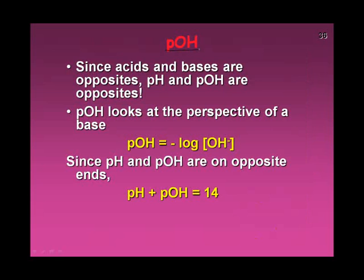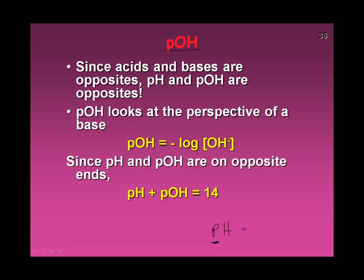Now let's look at pOH. The 'p' in pH means 'what is the concentration of H.' So pOH means what is the concentration of OH−. One key relationship: pH plus pOH always equals 14. So if I know my pH is 6, my pOH is 14 minus 6, which equals 8.